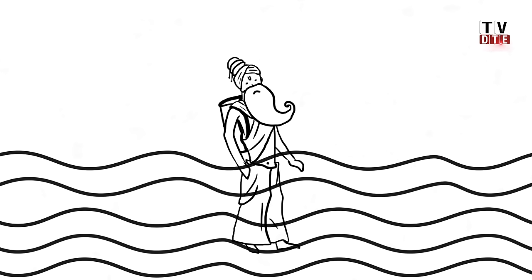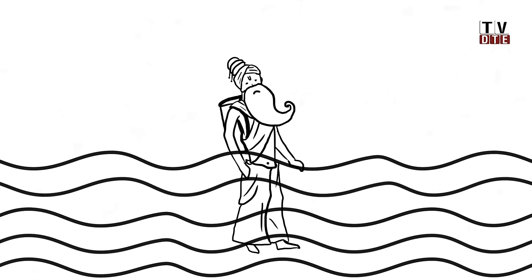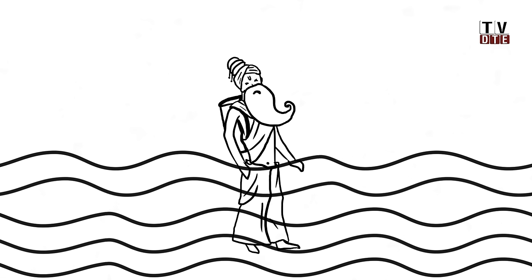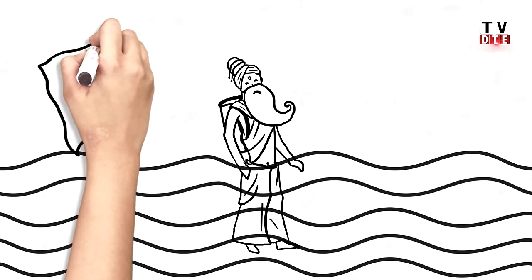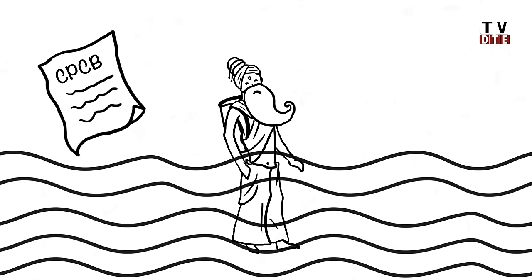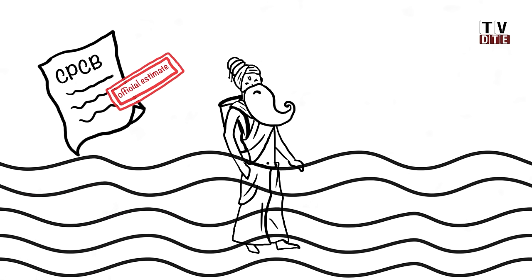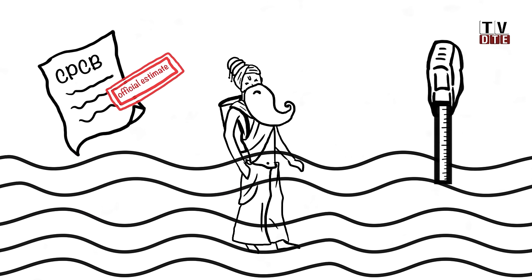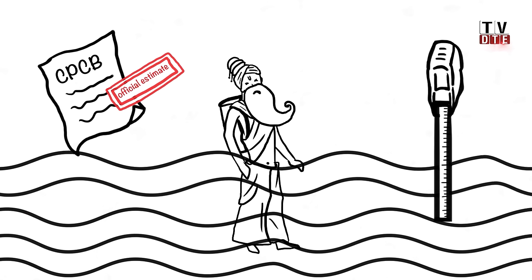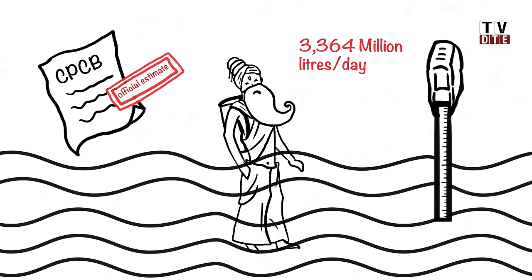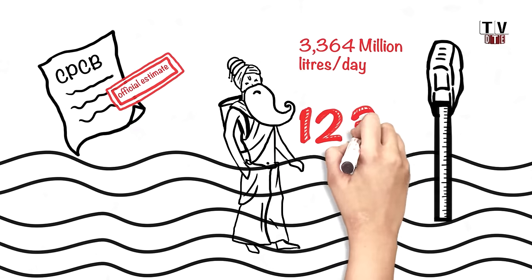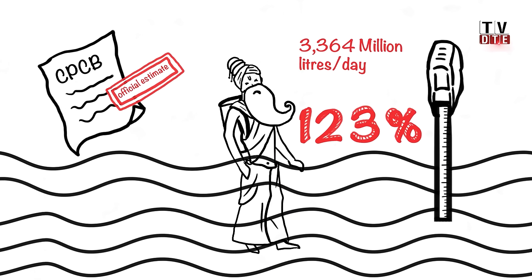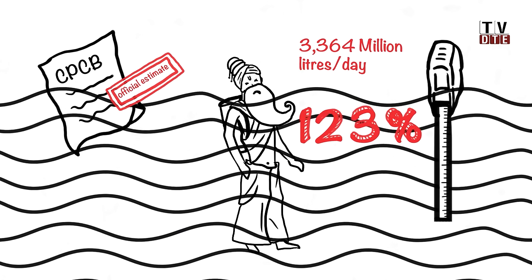Forget drinking, the Ganga does not even meet the Indian standards safe for bathing, except at some of the upper stretches in its course in Uttarakhand. A recent estimate by the Central Pollution Control Board shows the difference between the official estimate of sewage and the measured discharge of waste water into the Ganga is as much as 3,364 million litres per day. This is 123% higher than what the policy makers planned for.